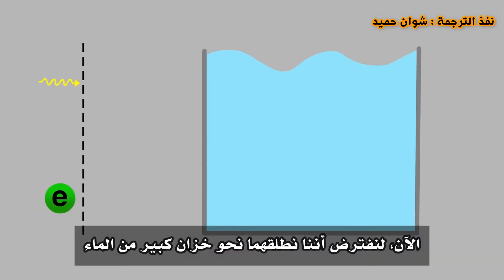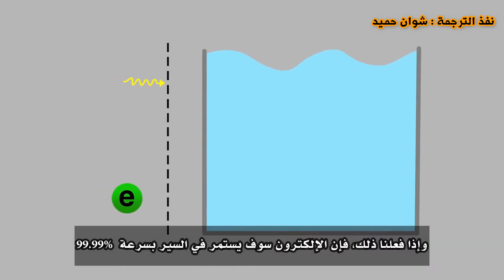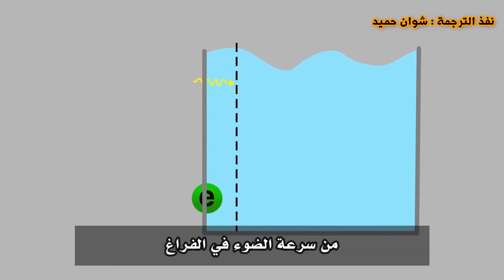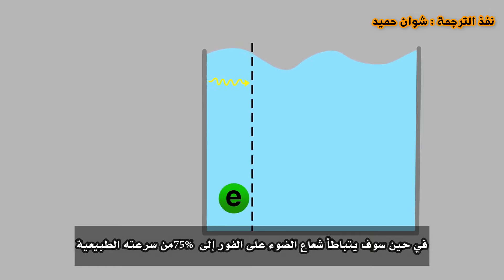Now, suppose that we shoot the two of them into a huge tank of water. If we did that, the electron would continue to travel at 99.99% the speed of light in the vacuum, while the light beam would instantly slow down to 75% its normal speed.